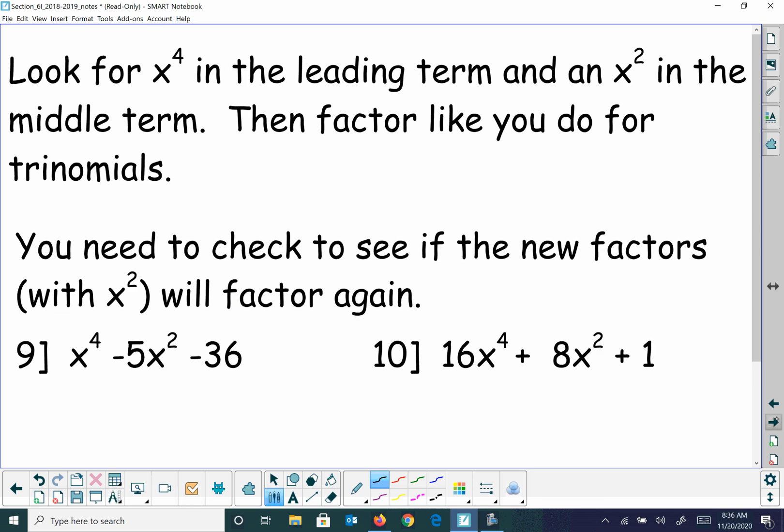All right, so look for x to the fourth leading term, and x squared is the middle term. Then factor like you do trinomials. Okay, so that's what we're doing. So we've got x squared and x squared. And I'm going to have minus 9 here, and I think that'll be plus 4 there. That won't factor, but this will. So that's going to give me x plus 3, x minus 3, and then it's going to give me x squared plus 4. And again, where we get hiccups on this is a lot of students want to factor x squared minus 4 as the difference of two squares, and it's the sum of two squares, and we don't have that answer.